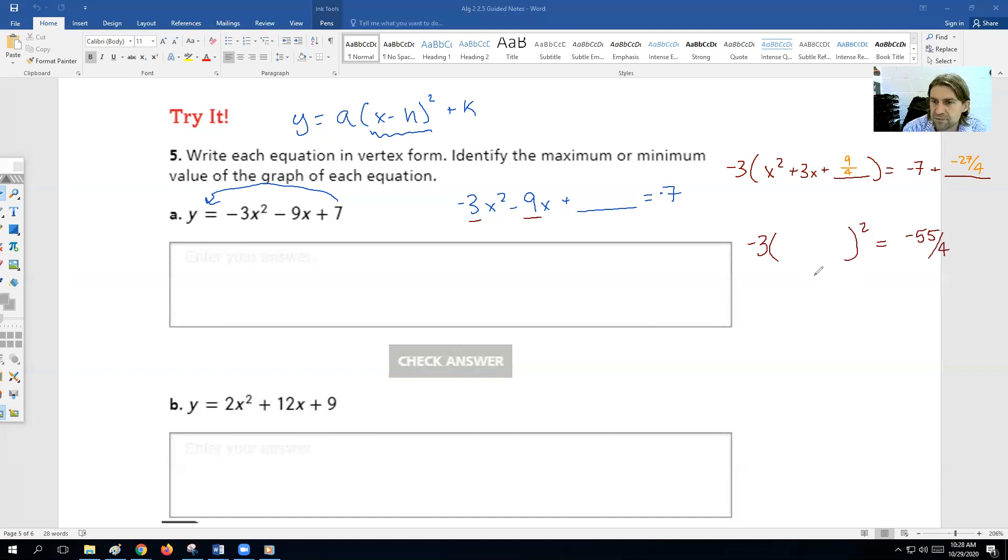So now our expression is going to come out to be, we still have this negative 3, but we can simplify this expression here. I'll have to do a little bit of math here. This is negative 28 over 4, that's negative 27 over 4, so that's negative 55 over 4. I should have picked better numbers here, but it's okay. It's going to work out. We're going to get x plus 3 in the middle, and then 3 cut in half is 3 over 2, or 1.5 if you want to use decimals.